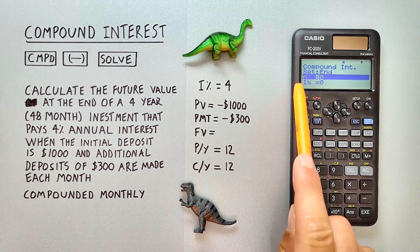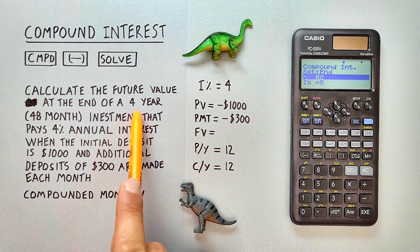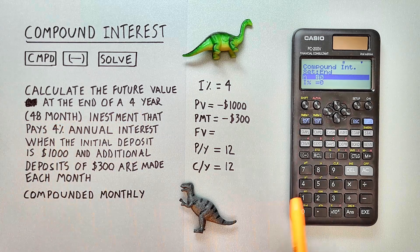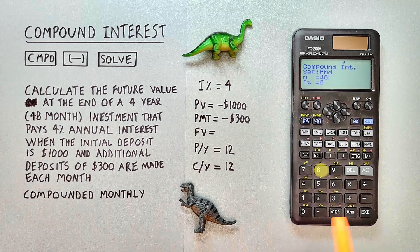n is the number of payments. So we're doing one a month for four years. So that's 48 and hit EXE.